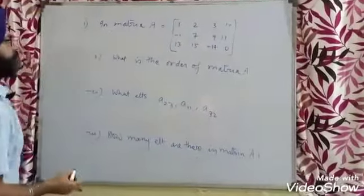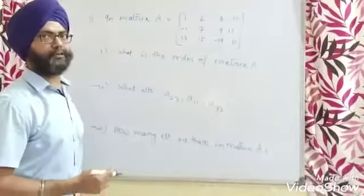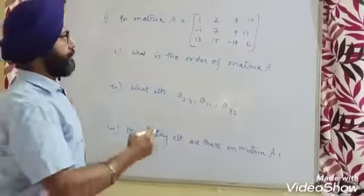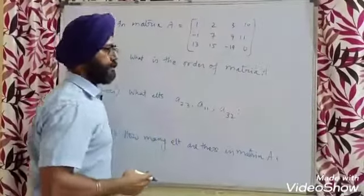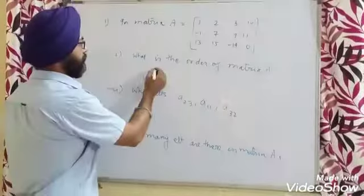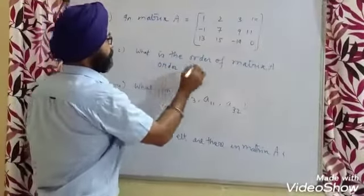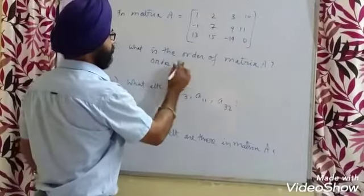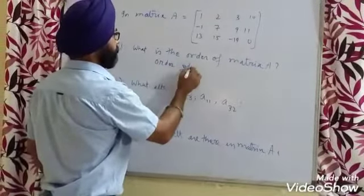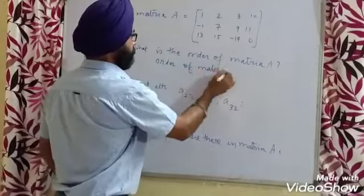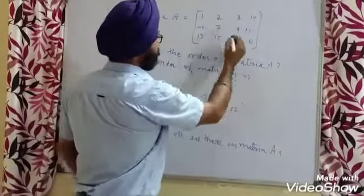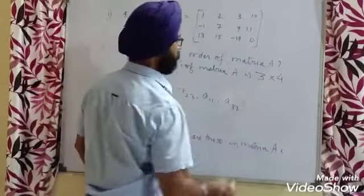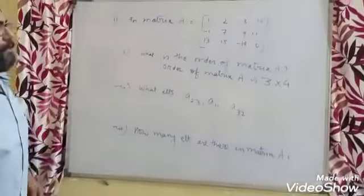For question one, let us see how many horizontal lines (rows) and vertical lines (columns) there are. The order of matrix A is three rows and four columns, so the order is 3 by 4.